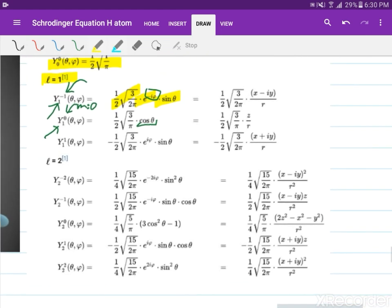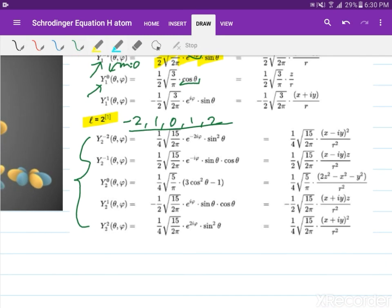We also have L equals 2 here. You will see that L equals 2 can have magnetic quantum numbers: minus 2, minus 1, 0, 1, and 2. That is why we have 5 Legendre polynomials associated with L equals 2.